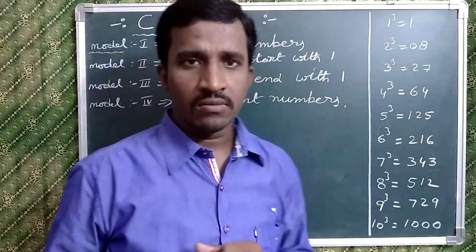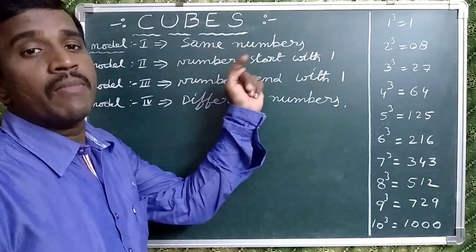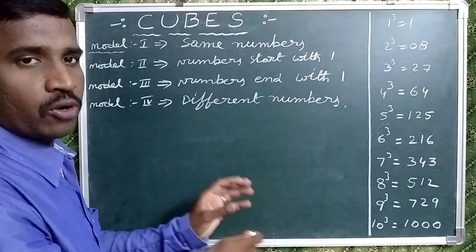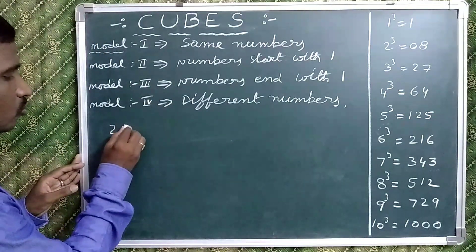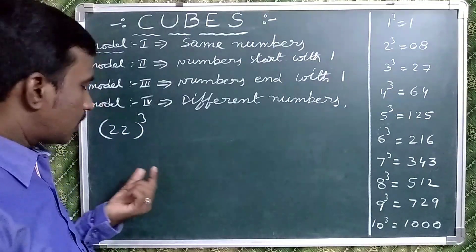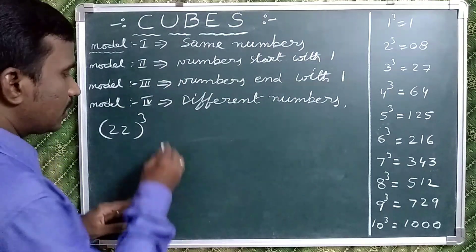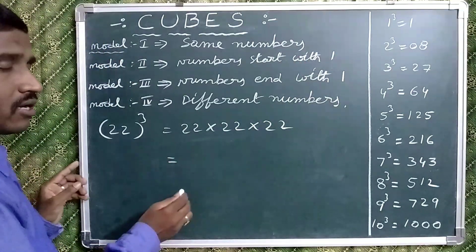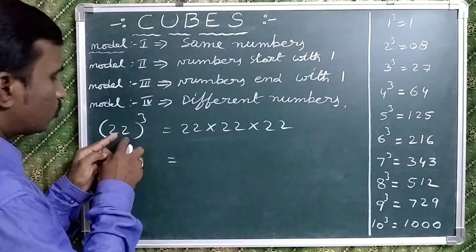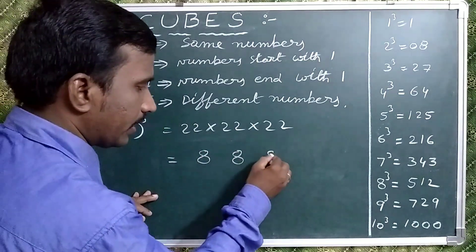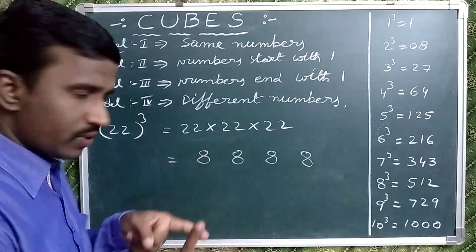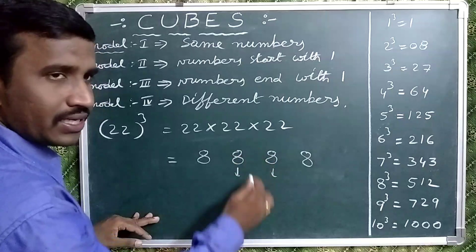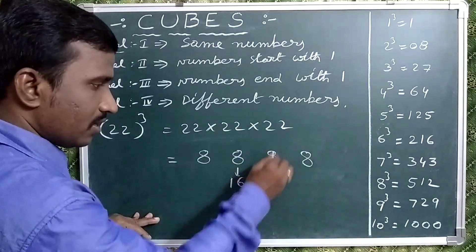Now observe the first model. In the case of the first model, take same-digit numbers like 11 cube, 22 cube, 33 cube, 77 cube, like that. For example, 22 whole cube. 22 whole cube means 22 multiplied by itself 3 times. Take 2 cube four times: 2 cube means 8, 8, 8, 8. In the first step, write 2 cube four times. The middle two numbers are doubled: 8 times 2 is 16, 8 times 2 is 16.